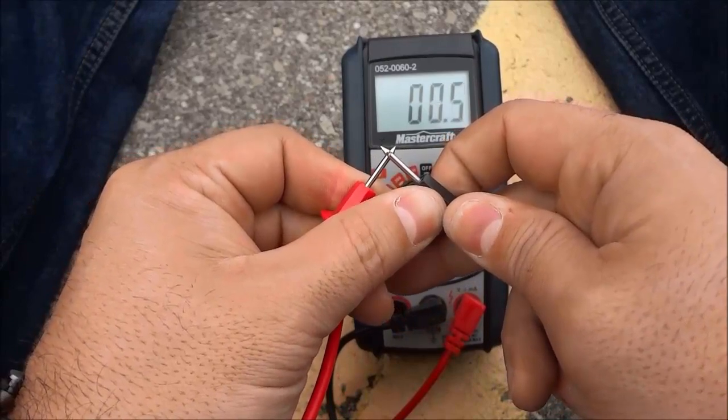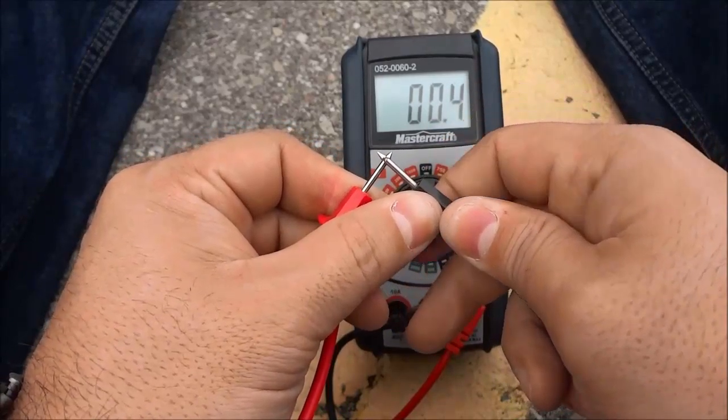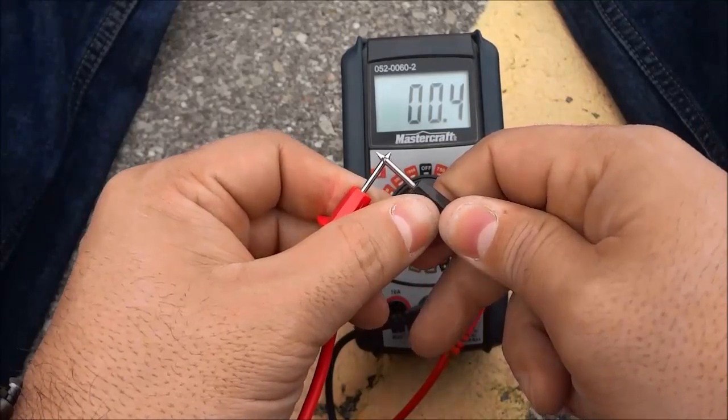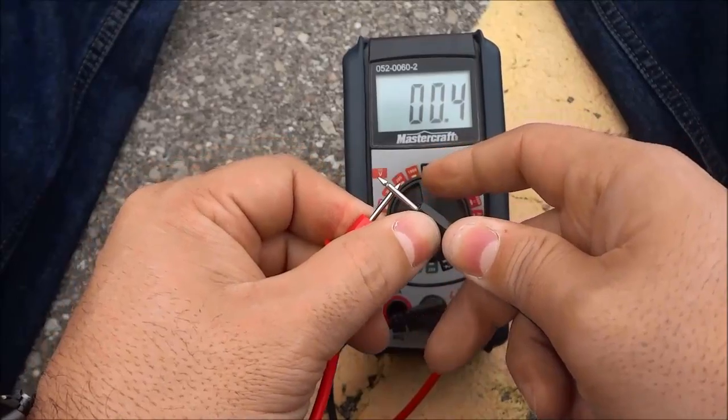I'm just going to try touching them like that. It probably does a little bit of a better job. So now I'm getting .4. The number should be zero or close to zero. I'm getting a number that is close to zero and it is not zero.